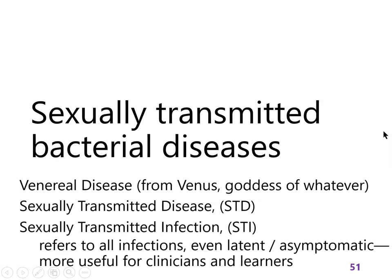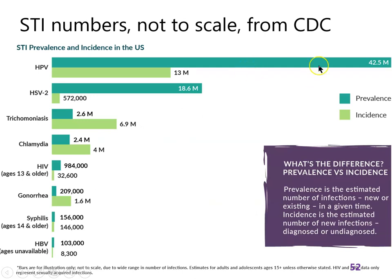Now shifting gears to sexually transmitted infections. The term STI is preferred because so many of these are largely asymptomatic. Other terms you need to know include venereal disease (VD) and sexually transmitted disease (STD). Looking at prevalence data — the dark green bar represents prevalence of the pathogen and the light green bar represents incidence.